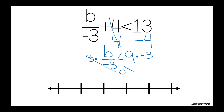It's going to be greater than. Now you're ready to multiply: 9 times negative 3 is negative 27.